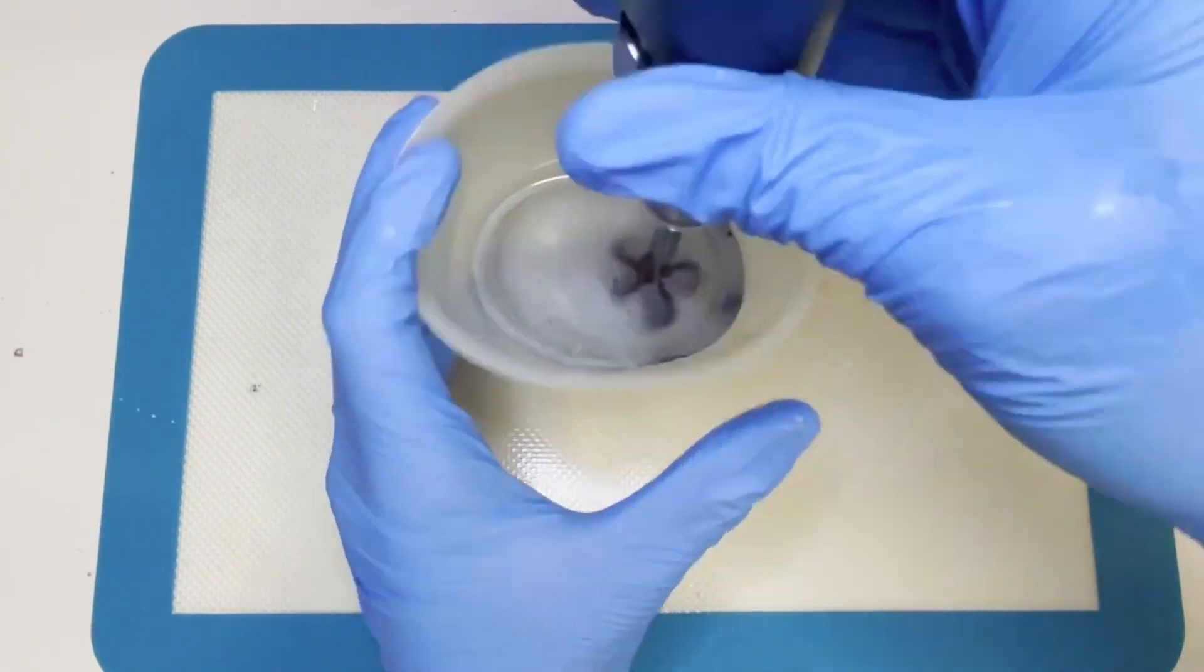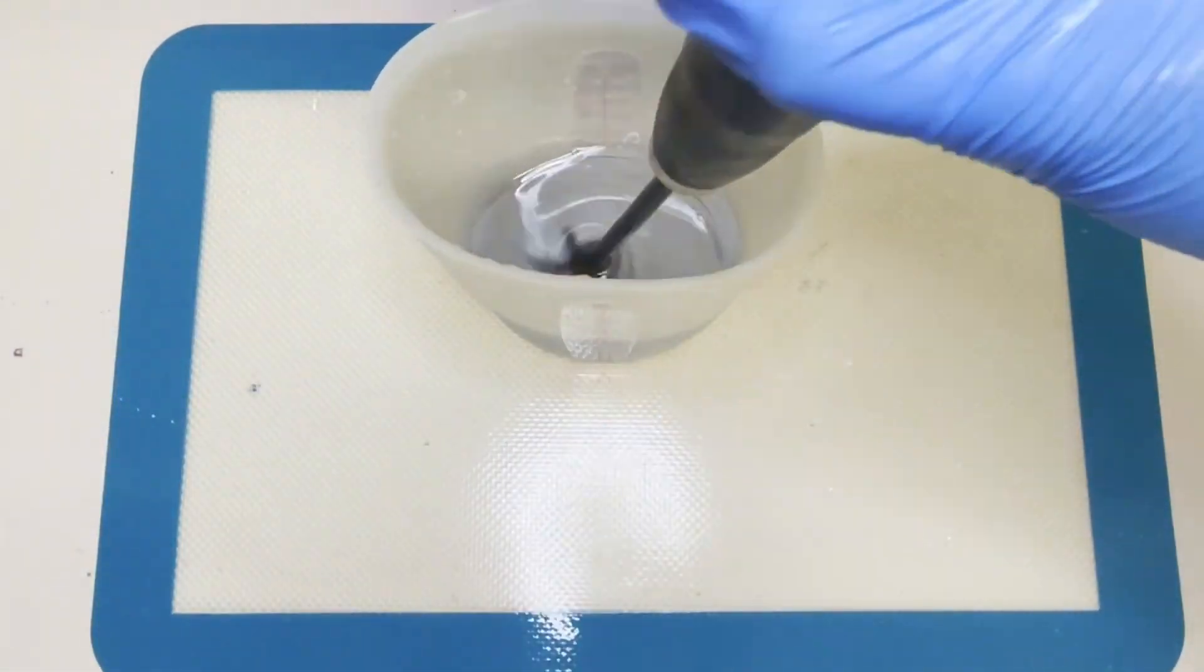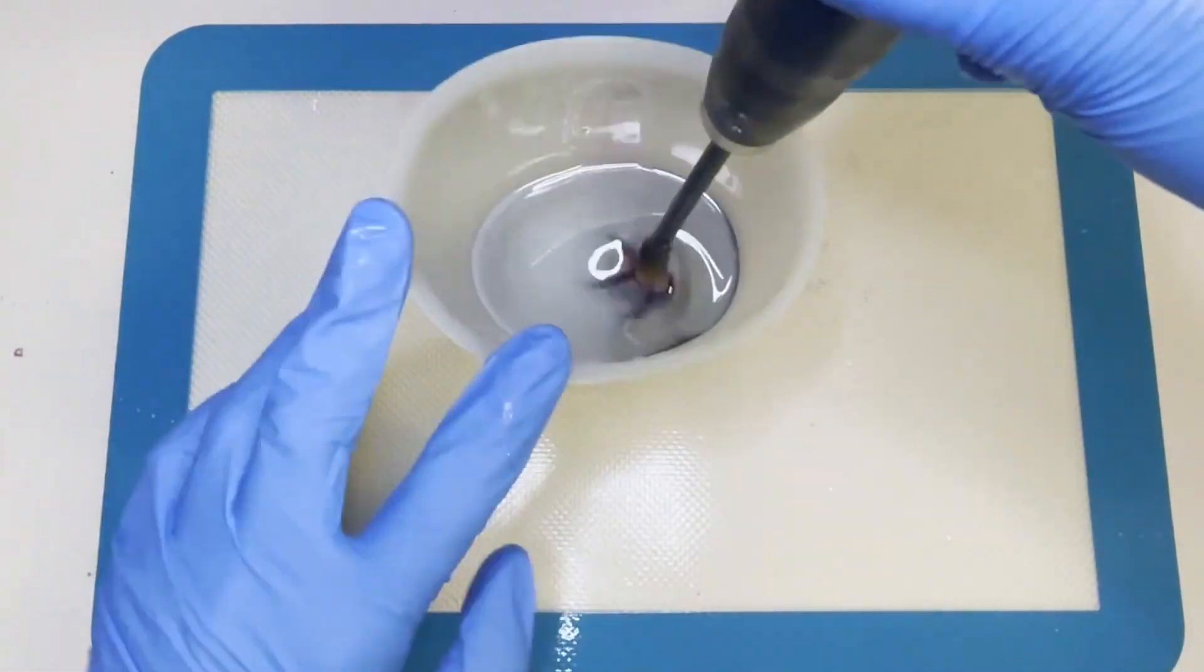The resin will go from clear to cloudy and then back to being clear when it's fully mixed.